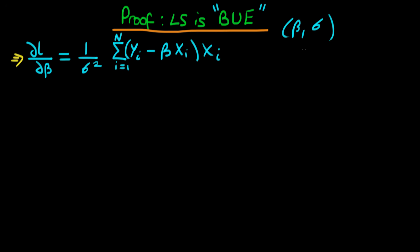Because of the way beta and sigma appear in the likelihood function, the information matrix is actually a symmetric diagonal matrix with only two elements: the top left, which I'll write as I_beta_beta, and the bottom right, which is I_sigma_sigma. The other two entries are just zero.